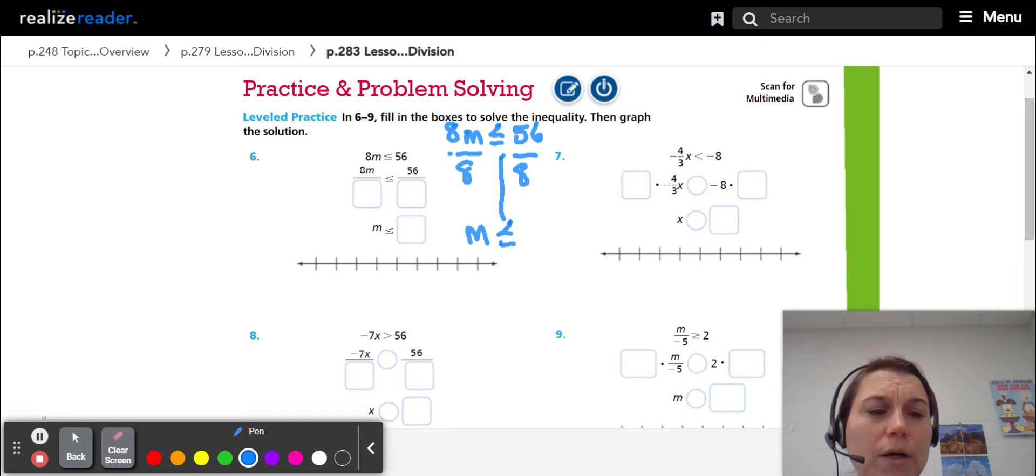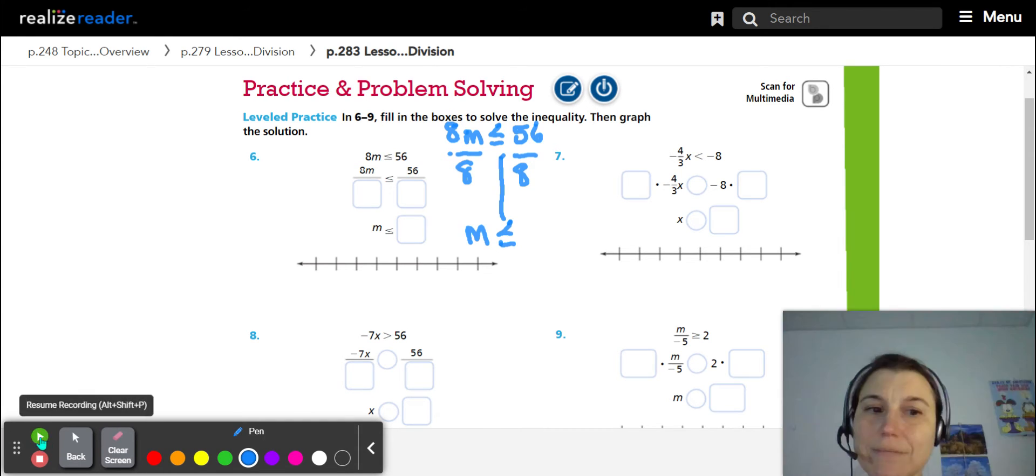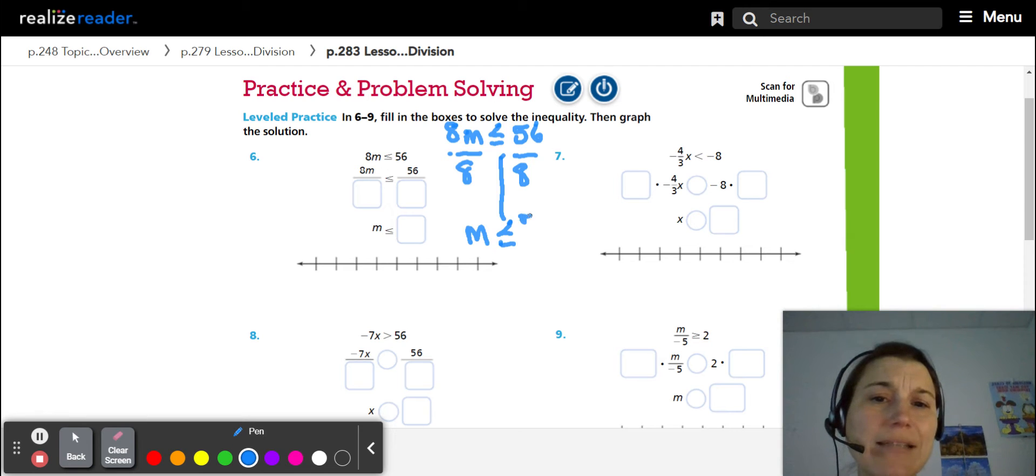Okay, so just like before, I'm going to have an inequality. I'm going to imagine that I'm just solving an equation. So I did the opposite of multiply. The lights went out. So the opposite of multiply is divide. So I divided both sides by eight, and then 56 divided by eight is seven.